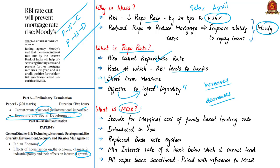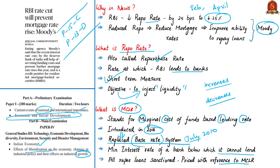Next, let us know about MCLR—the Marginal Cost of Funds-Based Lending Rate. The MCLR methodology for fixing interest rates for advances was introduced by RBI from 2016, replacing the base rate system introduced in July 2010. These advances could be for house loans, car loans, etc. MCLR is the rate below which a bank cannot lend, except in cases allowed by the RBI. It is an internal benchmark—a reference rate determined internally by the bank—and was introduced mainly to improve monetary transmission, which was not effective in the base rate system. The base rate calculation is based on cost of funds, whereas MCLR is based on marginal cost of funds, and is largely determined by deposit rates and repo rates.